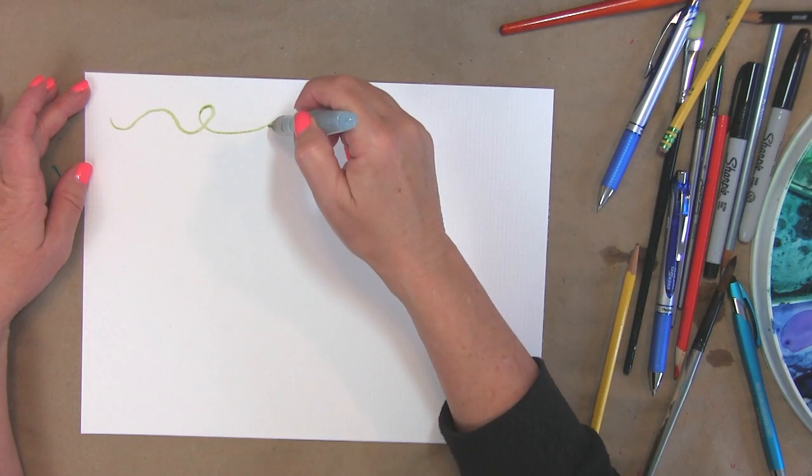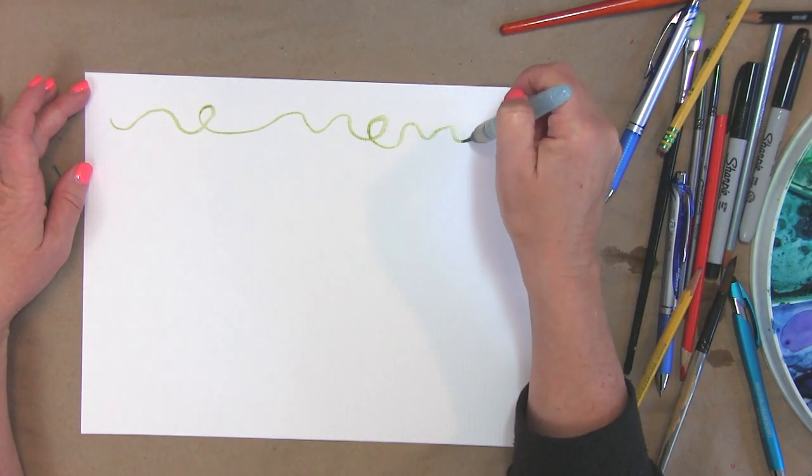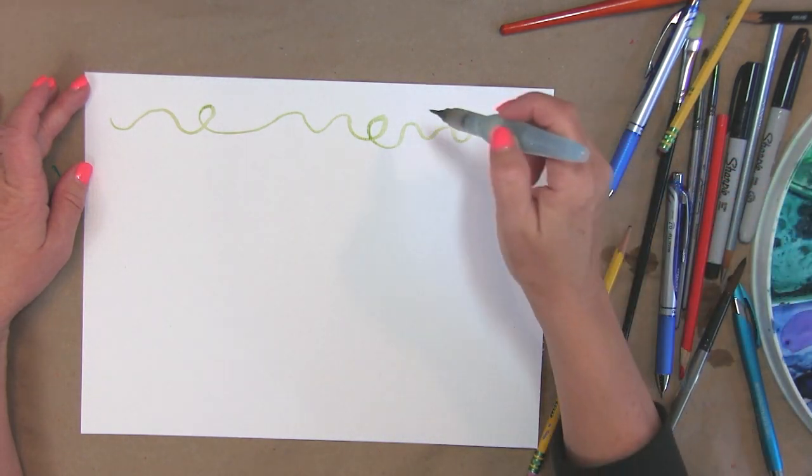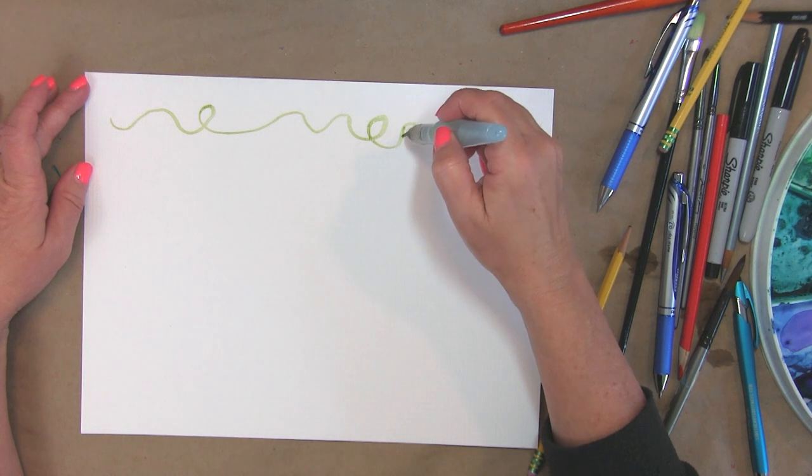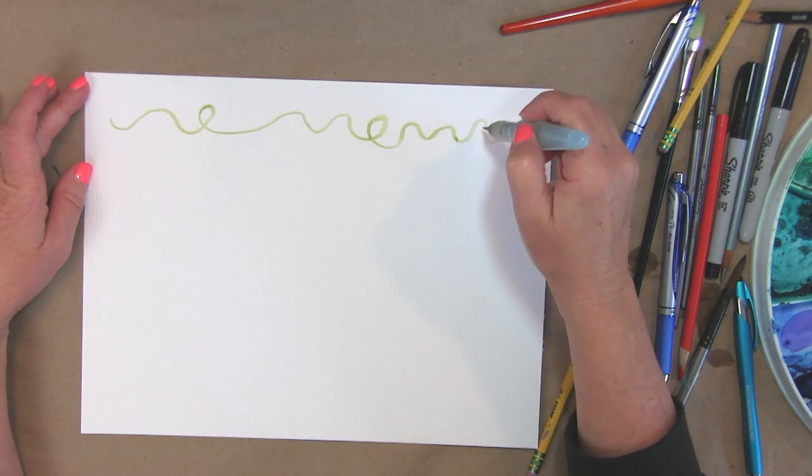I don't know if it would be better for me just to paint the flower border or if I need to draw it out with a pencil first. I'm kind of playing with that.